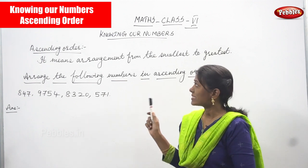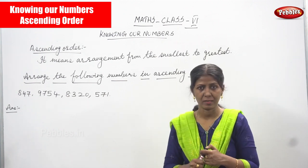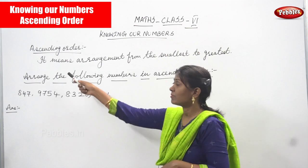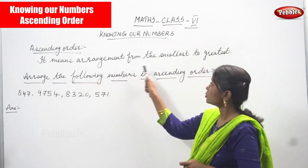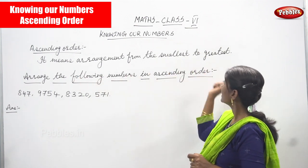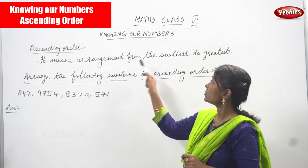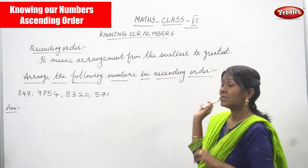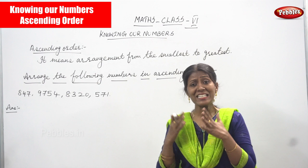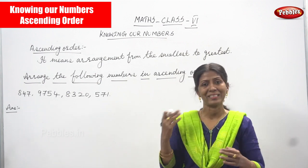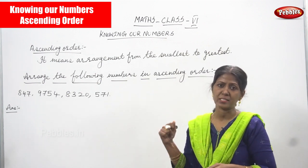Now we are going to see ascending order. First we must know what is ascending order. The definition: it means arrangement from the smallest to greatest. That is called ascending order.